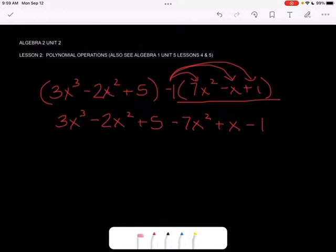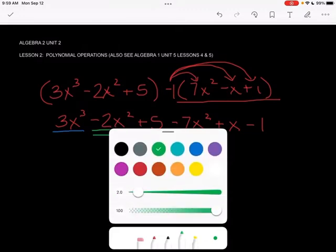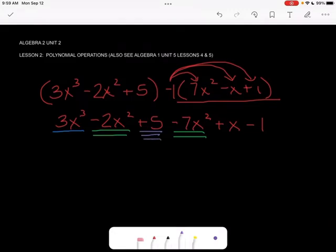Now I can combine like terms. Well, I've got a 3x cubed, but there's no other 3x cubed here, so there's nothing I can combine that with. I've got a negative 2x squared and I have a negative 7x squared, so I will be able to combine those. I've got a 5 and a negative 1, so I can combine those, and I also have just this x here, which is also its own term. There's nothing to combine it with.